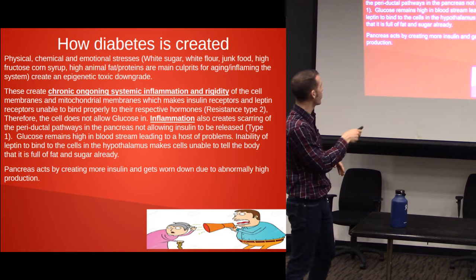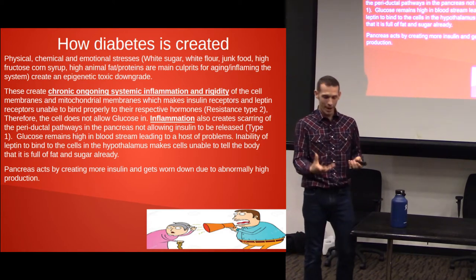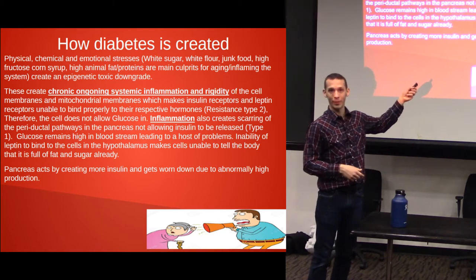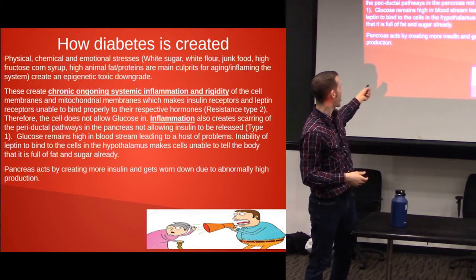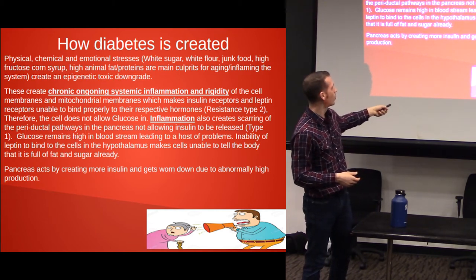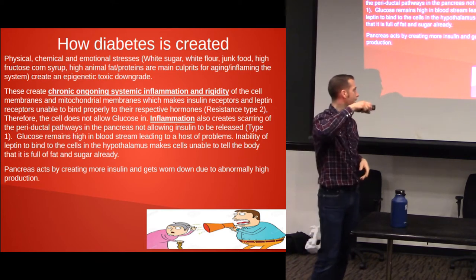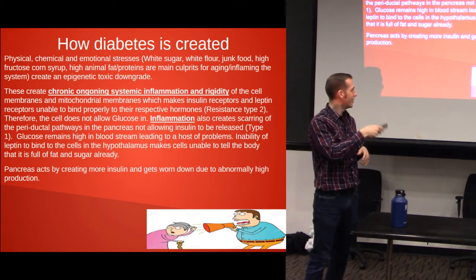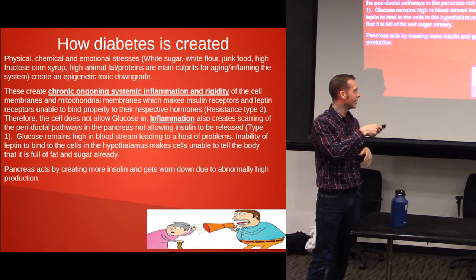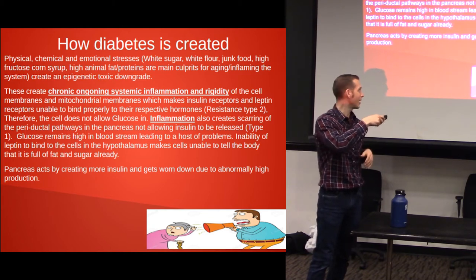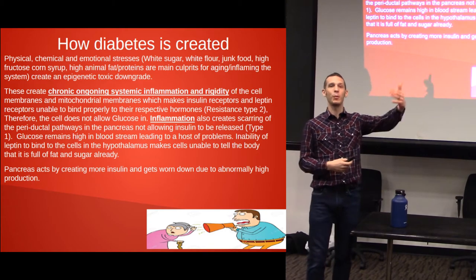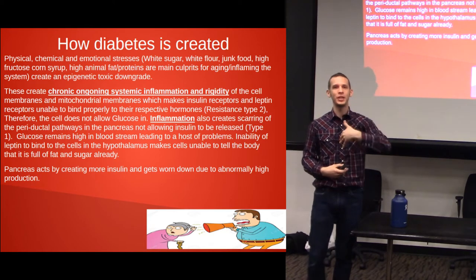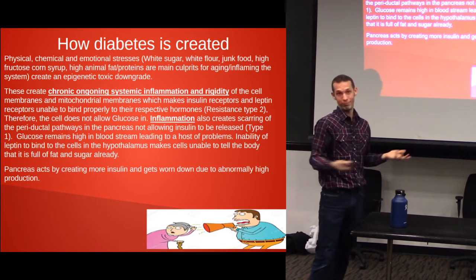The pancreas then acts by creating more insulin — it says, we have all this sugar, we still need to try to get this stuff out of the body. The body keeps dumping it in and gets worn down to an abnormally high production. This is like insulin talking to a deaf cell — the cell can't hear what's going on. They keep yelling louder and louder, and the insulin is not actually getting into the cell.